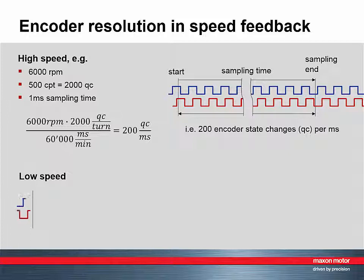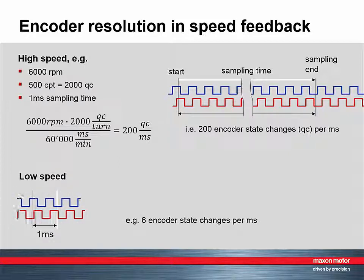The situation looks different at low speed. In the same millisecond, there might be just a few counts. The resulting speed resolution is still one quad count per millisecond, but this corresponds in this case to 16% or even more at lower speed.